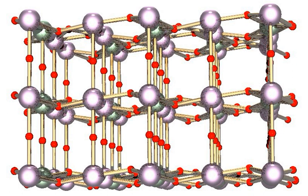Triuranium octoxide is a compound of uranium. It is present as an olive green to black, odorless solid. It is one of the more popular forms of yellowcake and is shipped between mills and refineries in this form.